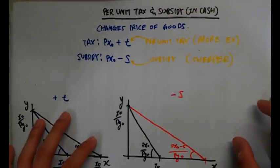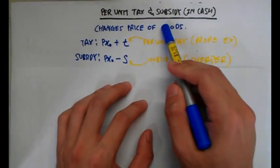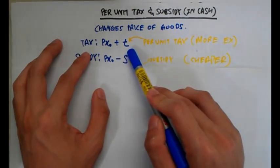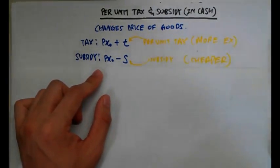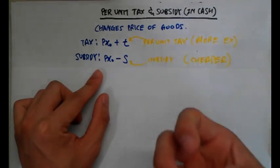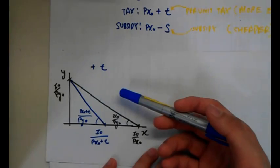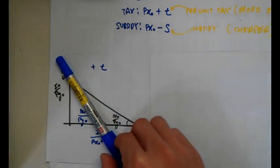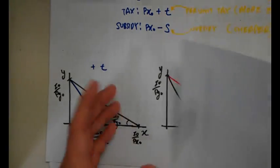Moving on to per unit taxes and subsidies in cash. These change the price of goods. The notation for the new price under a tax is PX-naught plus t, where t is the per unit tax. For a subsidy, it is PX-naught minus s. With a tax, the price of X increases, so real income becomes smaller and the budget constraint rotates inwards. The real income notation is I-naught over (PX-naught plus t).